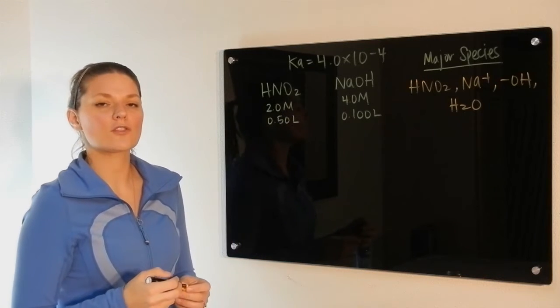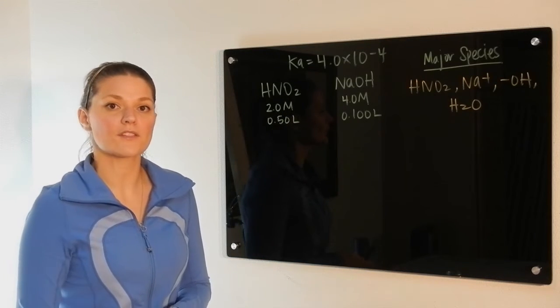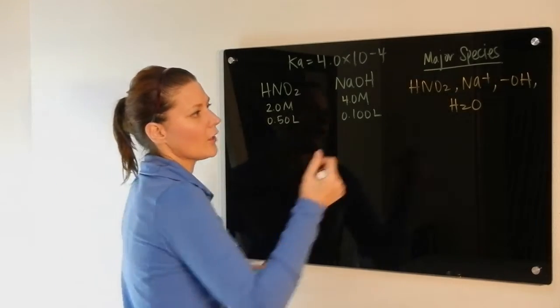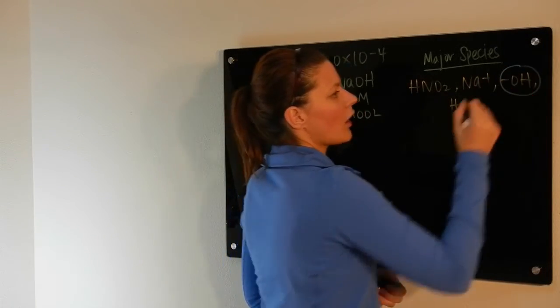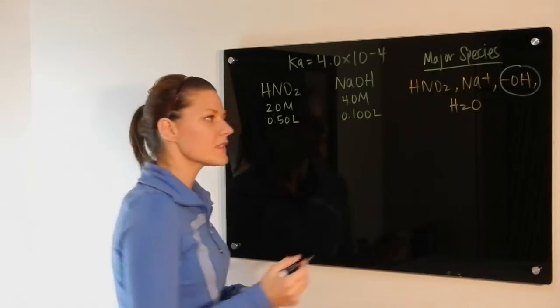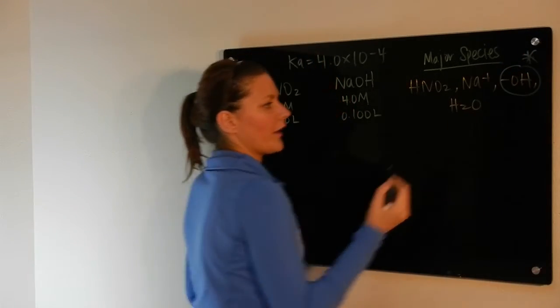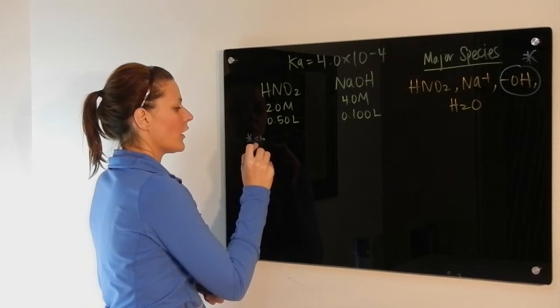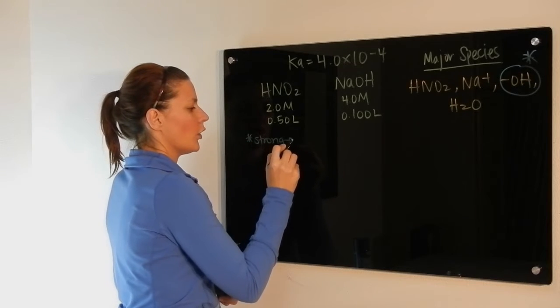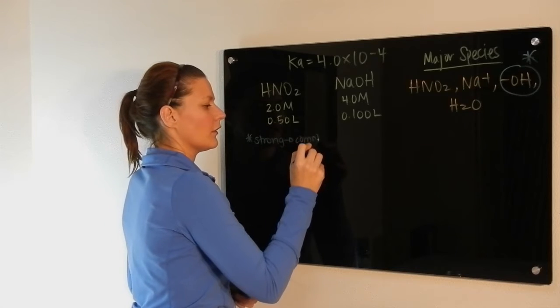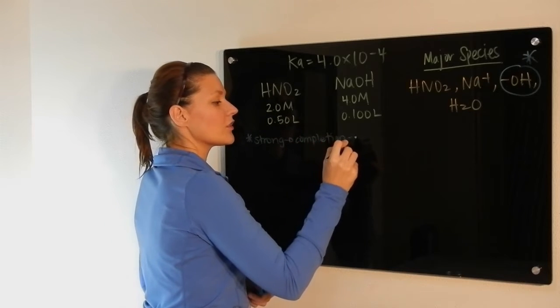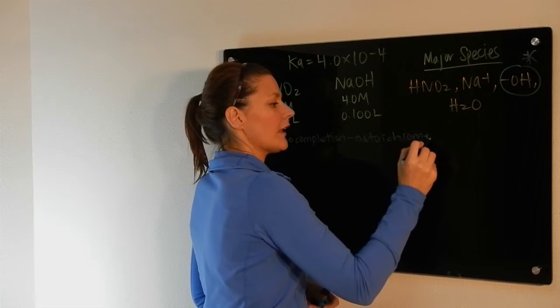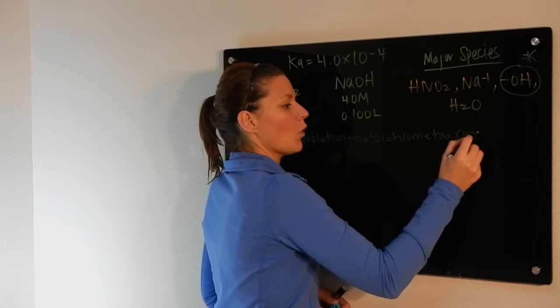When you look at the major species list, what you need to do is figure out what has priority. If we look at this listing here, we have a strong base. The strong substances always have priority. So the star just means priority. So your thought pattern is this. Strong substances react to completion, which means you need to do stoichiometry. And stoichiometry is in terms of moles.